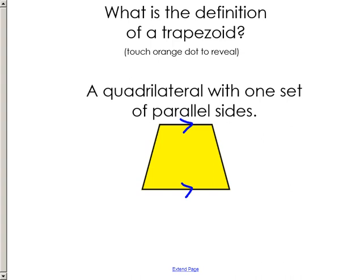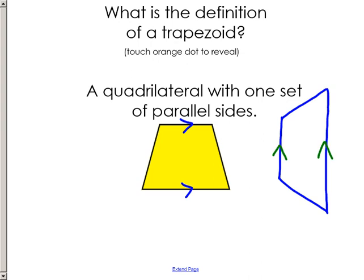Not all trapezoids look like the standard one. For example, trapezoids can look like they're on their sides, or turned over. Even something like this is a trapezoid — people often don't realize it, but it meets the definition: it has four sides and two of those sides are parallel. So that is the figure we're talking about finding the area of today.